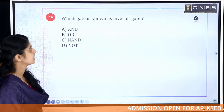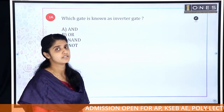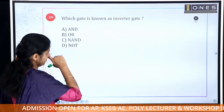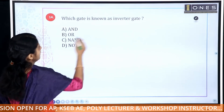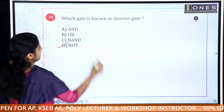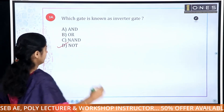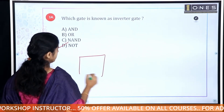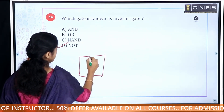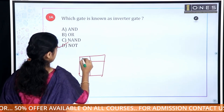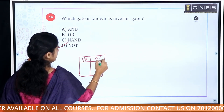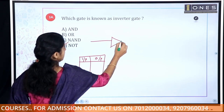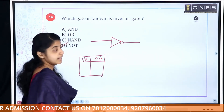Next question: Which gate is known as the inverter gate? The inverter gate is known as the NOT gate. The NOT gate truth table shows how the output is inverted relative to the input.